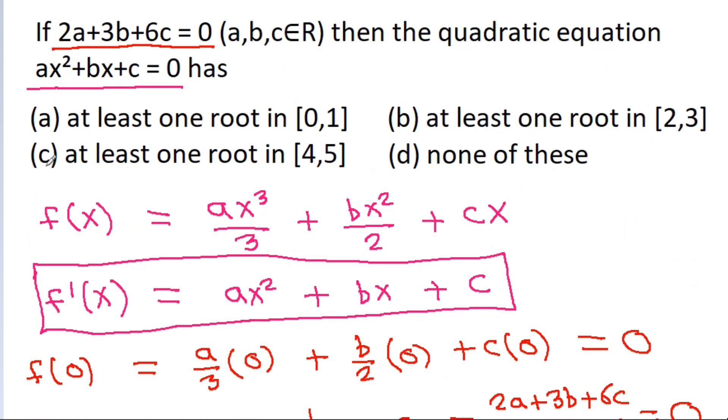So the correct option is option A: at least one root in 0 to 1.